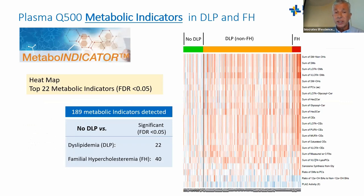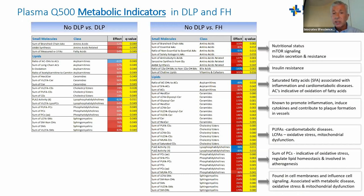We also use metabolic indicators extensively — software provided by Biocrates called MetaboIndicator. We found 22 metabolic indicators different between no-dyslipidemia and dyslipidemia, and 40 different between FH and no dyslipidemia. Notably, the same classes of compounds are affected in both dyslipidemia and FH, but in FH the effect size is much greater.